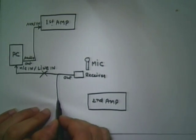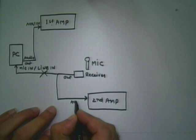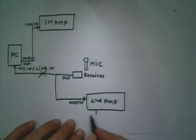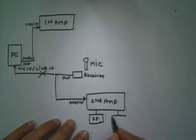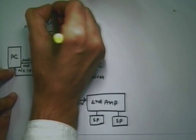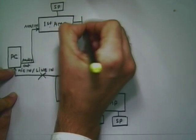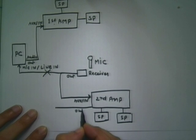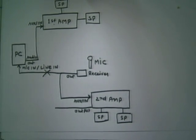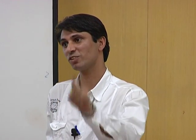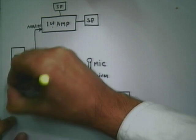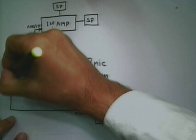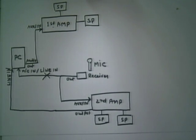Connect that cable to the auxiliary input of the second amplifier, and connect separate speakers for each amplifier. Take output from the second amplifier — preamp out or line out. If you use the second amplifier, the line should be connected to the line-in option only, because it provides high gain audio. This is the diagram for reducing echo.